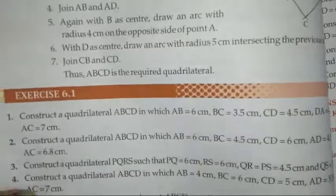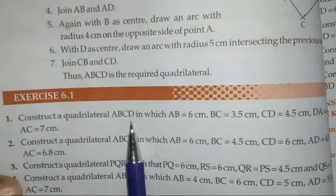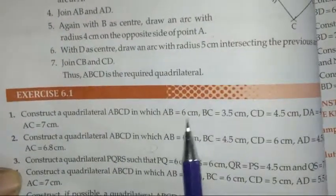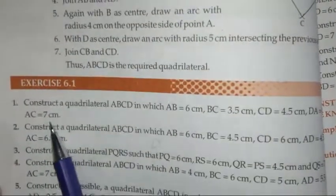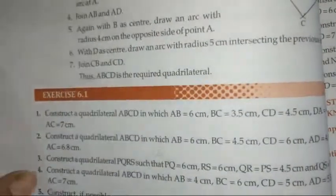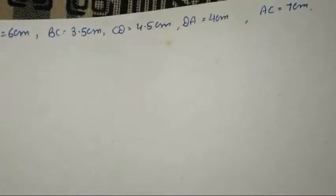This is the first step. So students, what do they give you? In exercise 6.1, construct the quadrilateral ABCD in which AB, BC, CD, DA, and AC are given. So students, how can we solve?